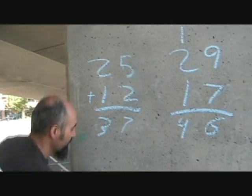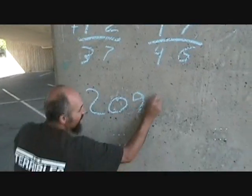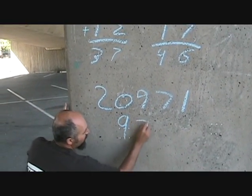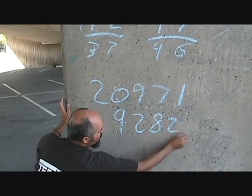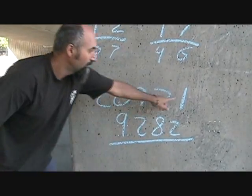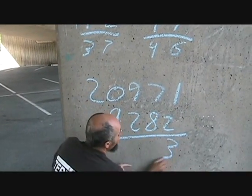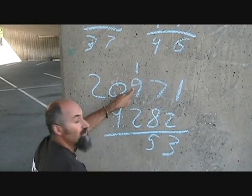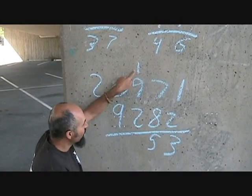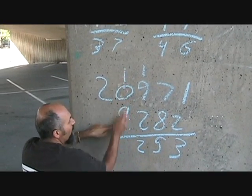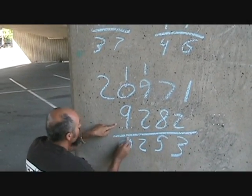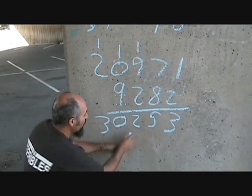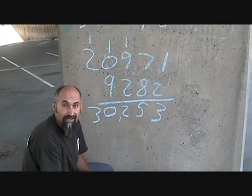What if you had a huge number? 20971 plus 9282. Well, 1 plus 2 is 3. 7 plus 8 is 15, that means you carry the 1 up here. 9 plus 1 is 10 plus 2 is 12, you carry the 1. 1 plus 9 is 10, 0, you carry the 1, 3. Simple as that. If you want, you add your little column up so it becomes easier to read.